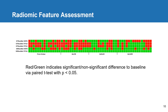We also looked at radiomic feature values and compared them to the values extracted from the baseline results. We selected 57 features such as first-order intensity, gray-level co-occurrence matrix, gray-level run-length matrix, and gray-level size-zone matrix. We found that 54% of feature values from the output of the quantized ST ResNet were still consistent with the baseline distribution.